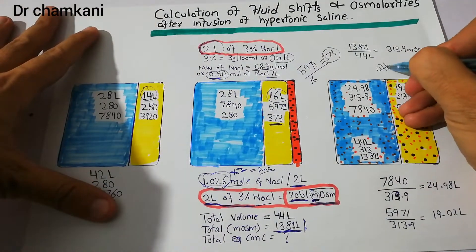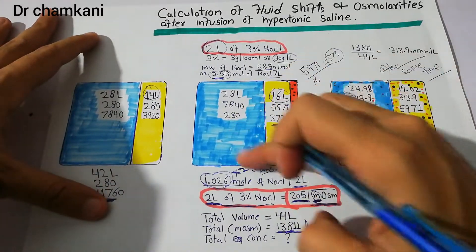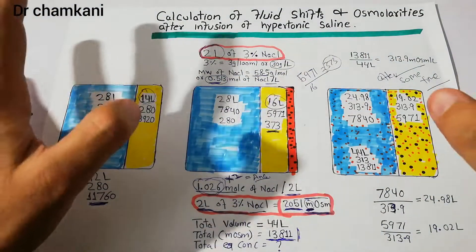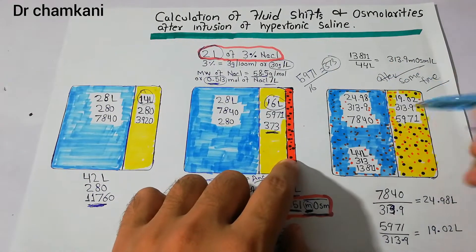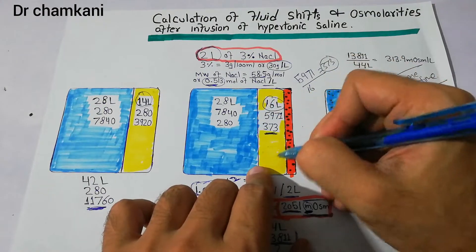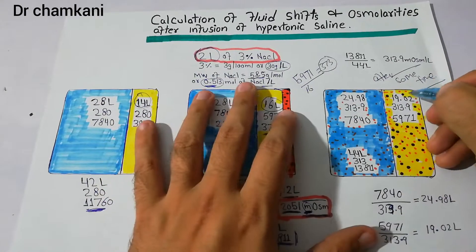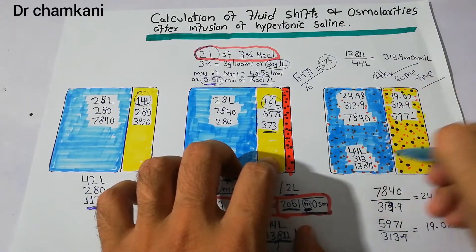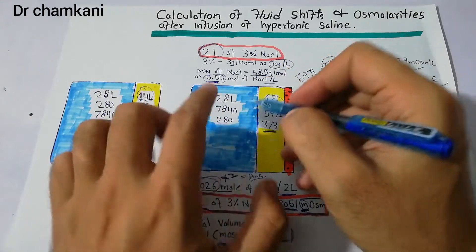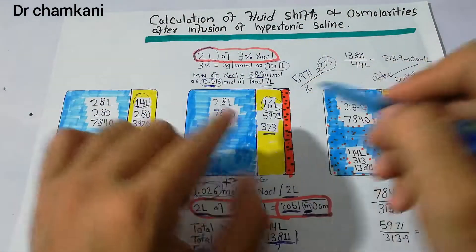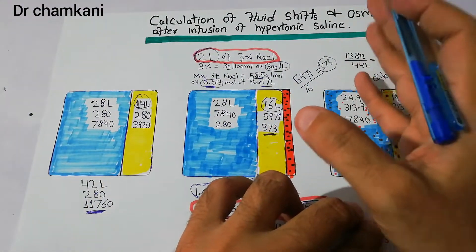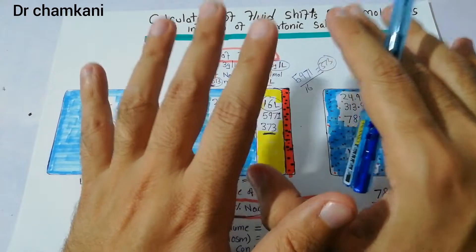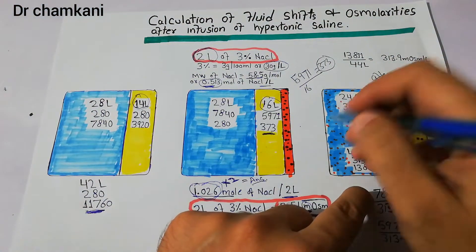After some time, the fluid distributes between both compartments. However, the sodium and chloride from the 3% saline cannot pass the cell membrane — they remain in the extracellular compartment. The black dots (Na⁺ and Cl⁻) stay in the ECF, while the orange water distributes across both compartments. The cell membrane is semi-permeable: it allows water movement but not these solute particles.